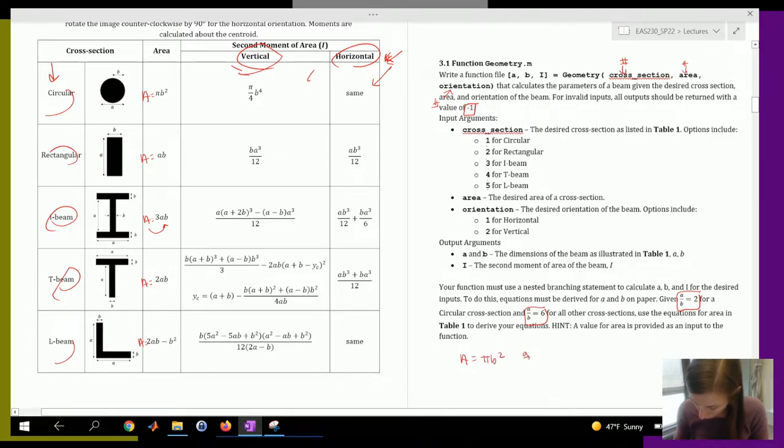And A over B equals two, you can go ahead and figure out your calculations. So use this to solve for B. So here B would be A over pi square root. And then here A would be two times B. So these are the calculations you would have to use in your function.